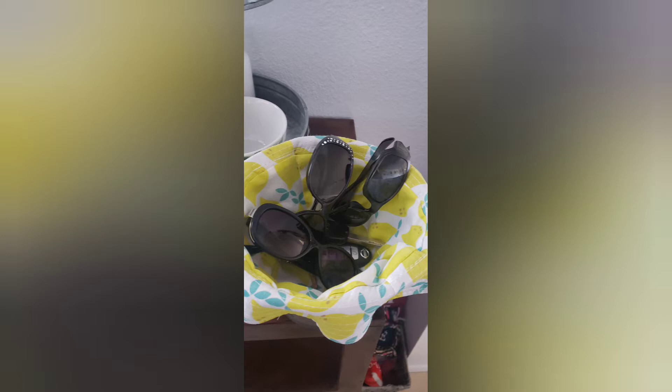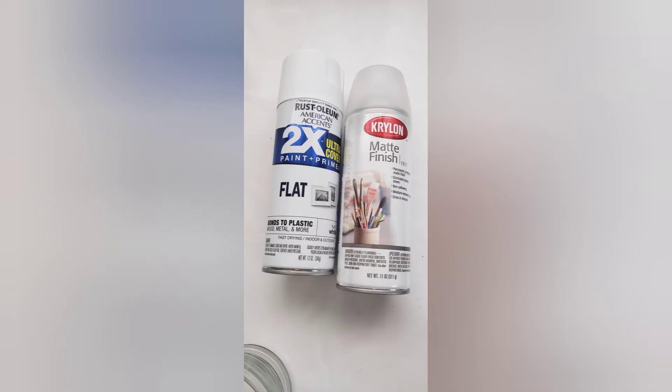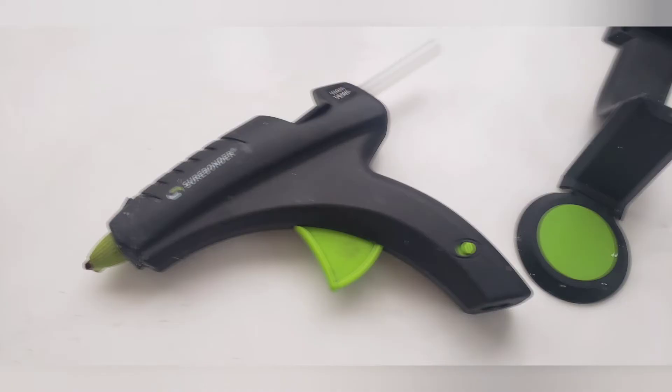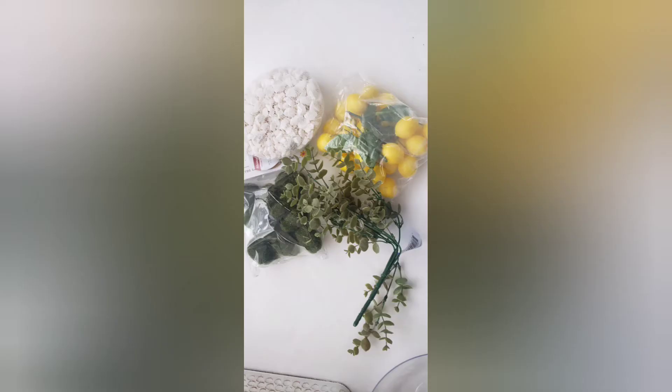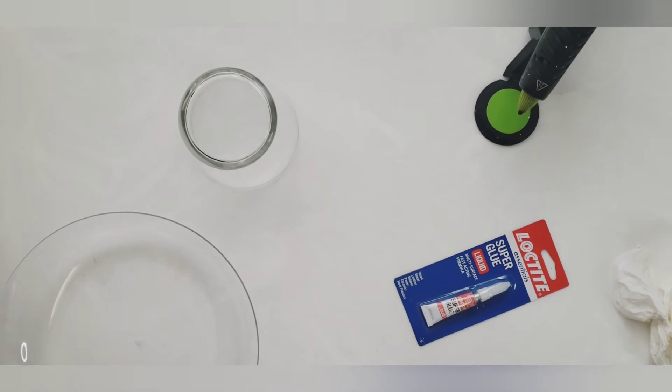Okay, so DIY number two. For this DIY I'm going to use the candle holder and the floral dish from the Dollar Tree. I'm going to take some flat white paint and some matte finishing spray and give that a couple coats. I'm going to use super glue and some hot glue.